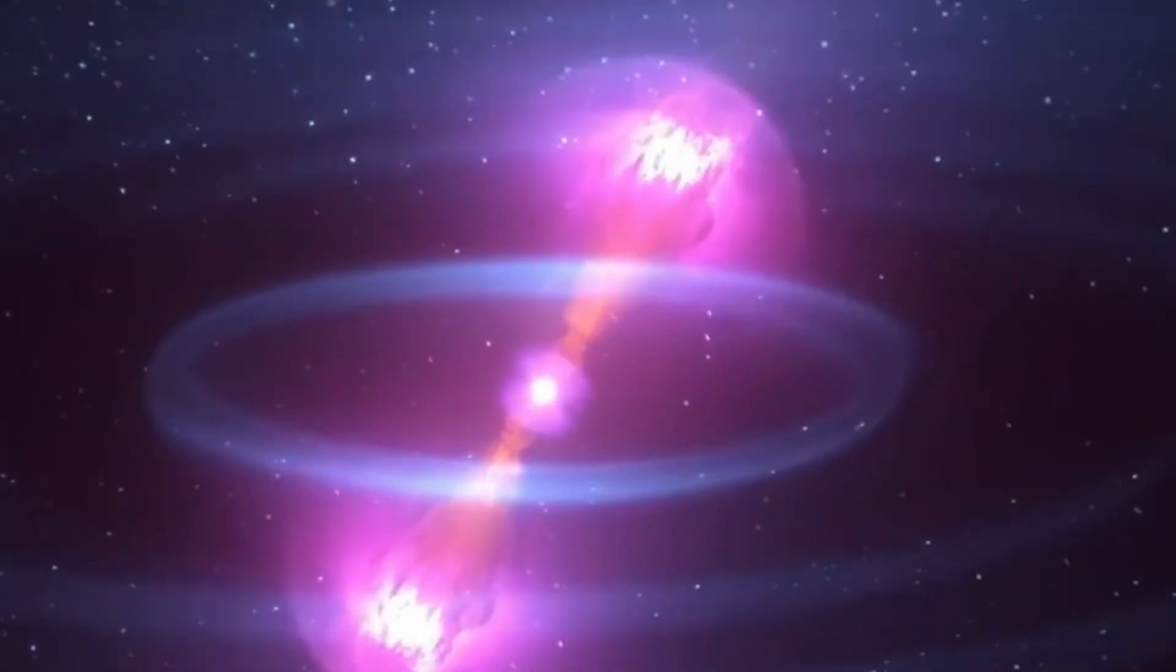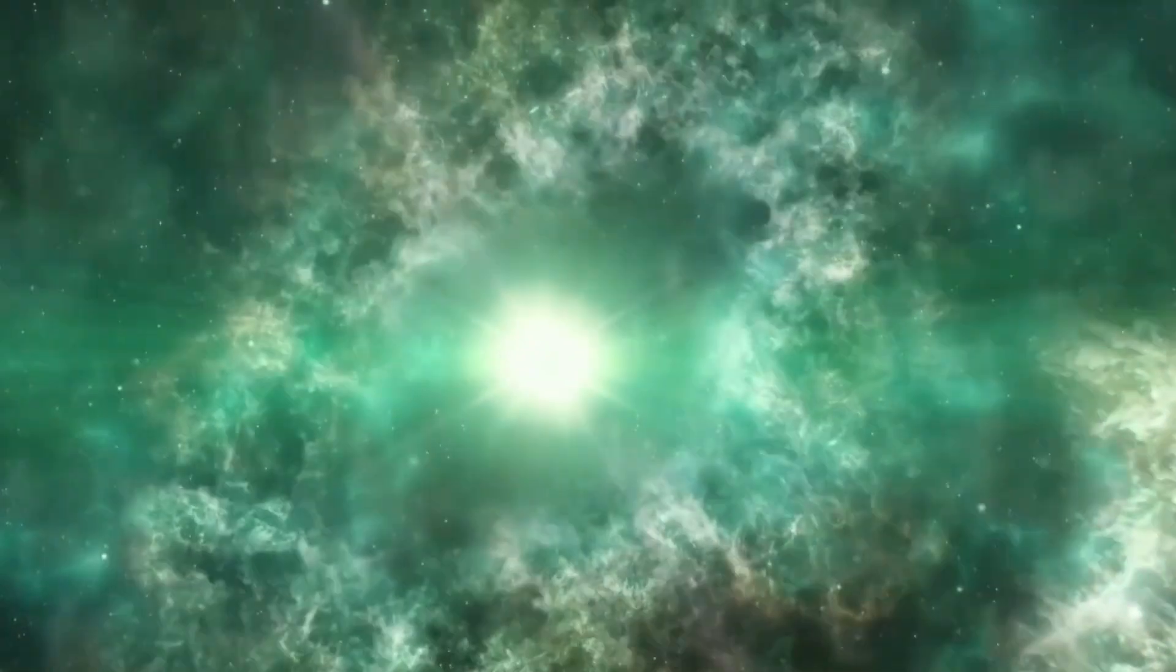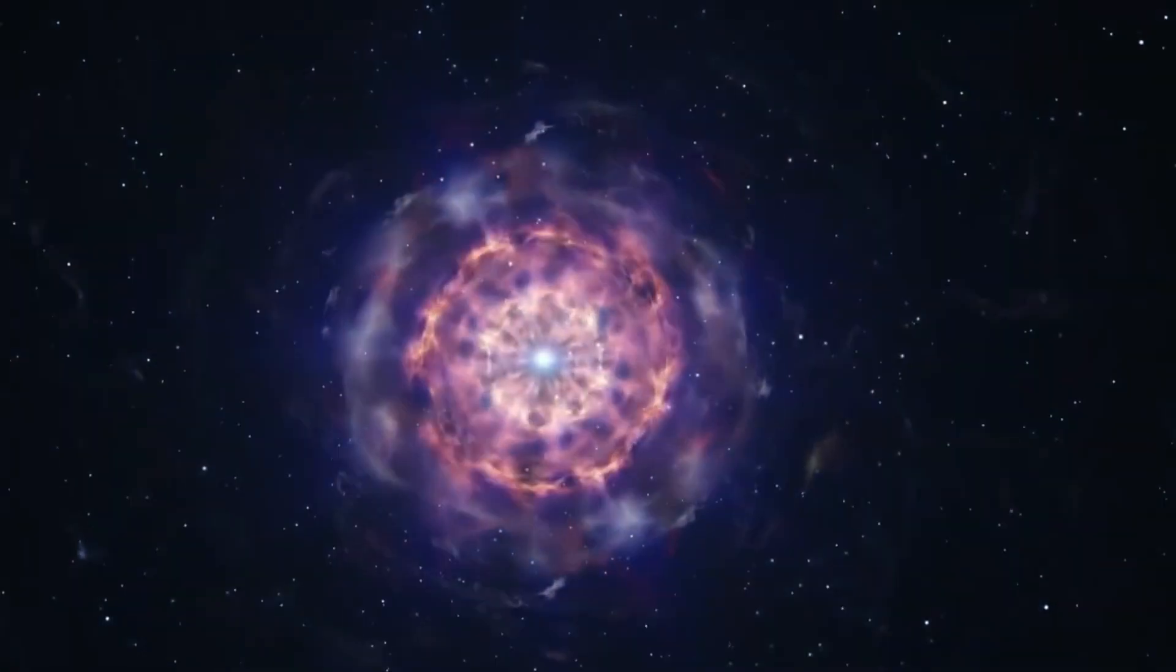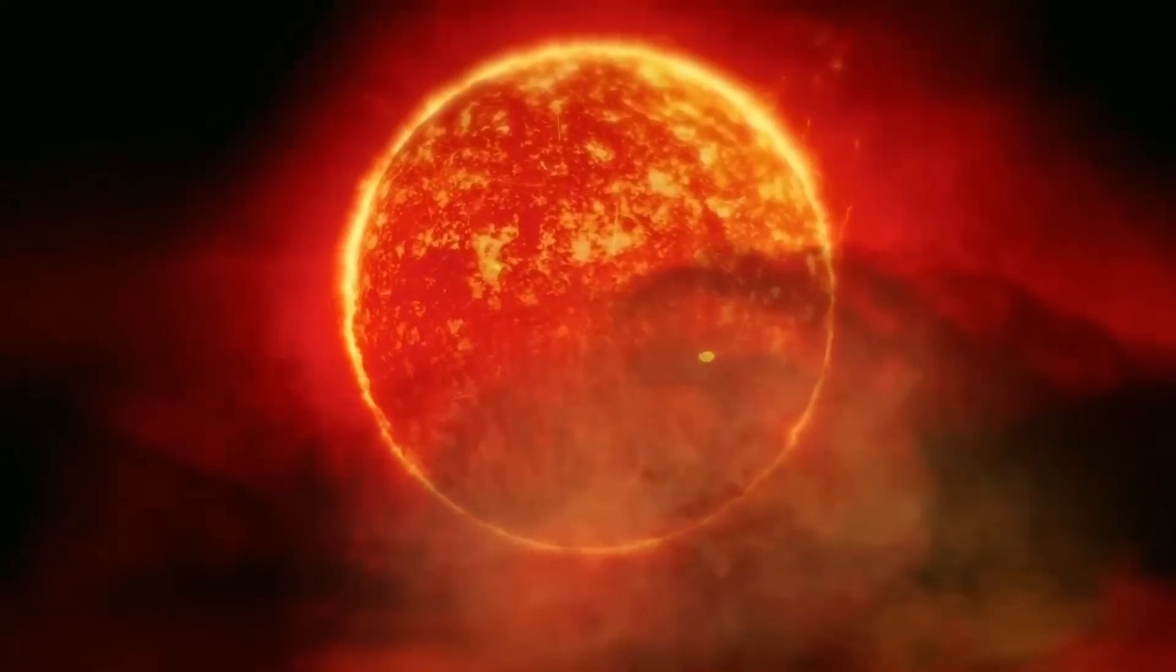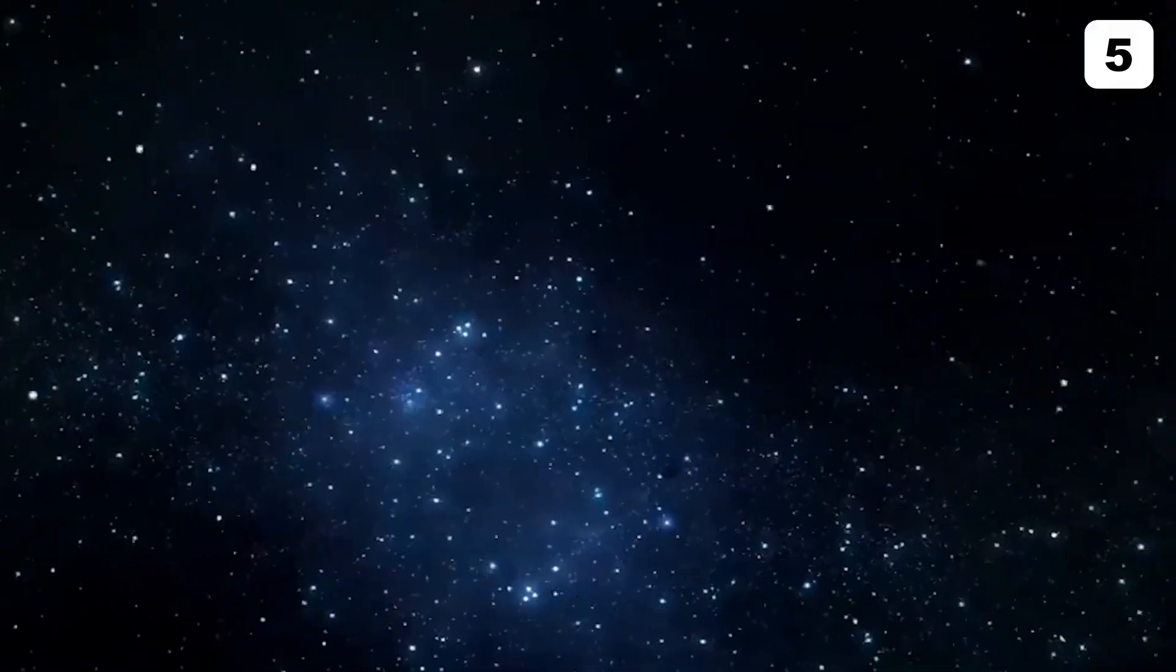When supernovae happen, they send debris and gas into space. People have seen these things, but they were only seen after the explosion. That changed in the summer of 2020. In its last days, scientists were able to see the full life cycle of a red supergiant for the first time. They even saw its huge explosion as it turned into a supernova.